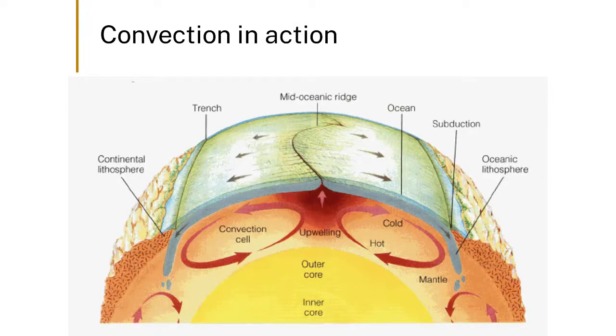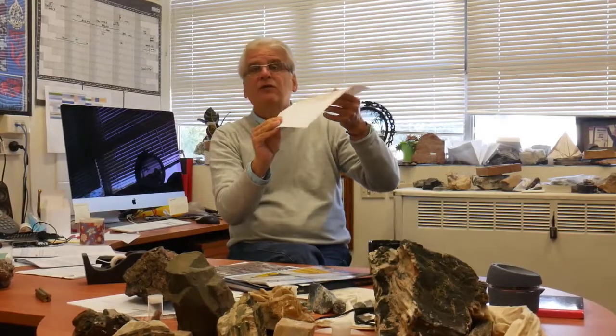As the slab enters the Earth, it's pretty much room temperature, so we're taking room-temperature material and putting it down where it's two thousand degrees. Obviously it gets transformed into other minerals as the slab goes down, metamorphosing into different crystalline forms.